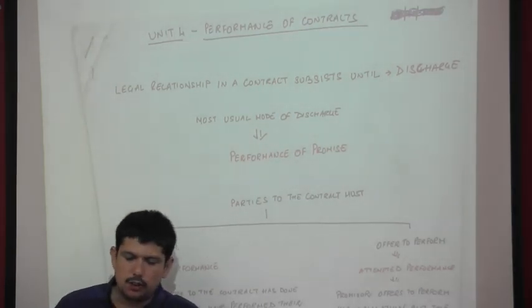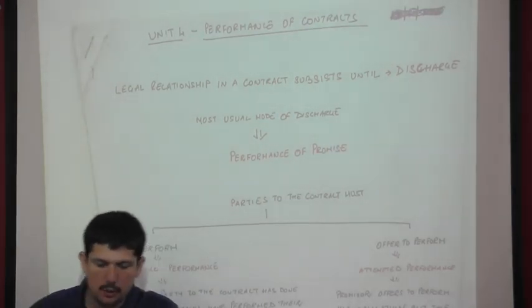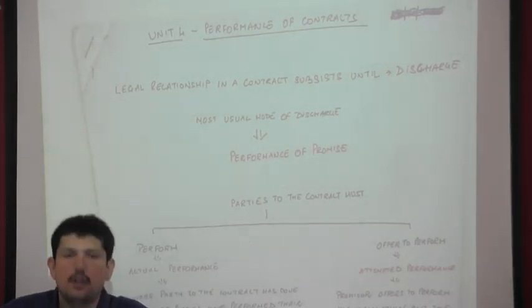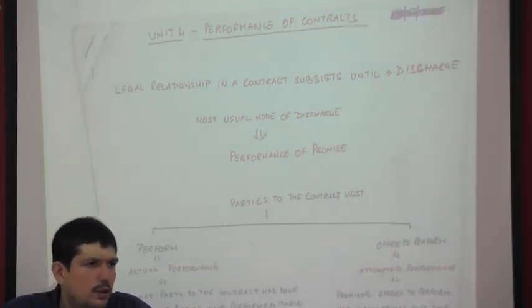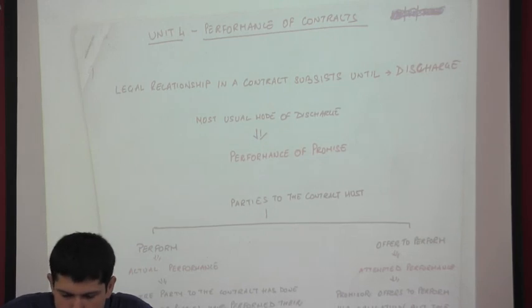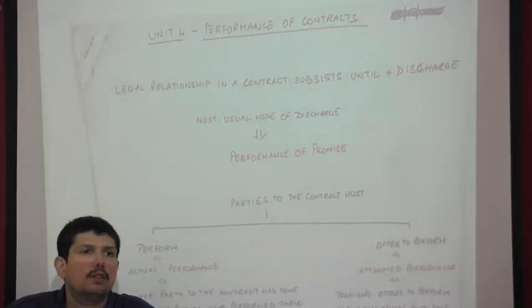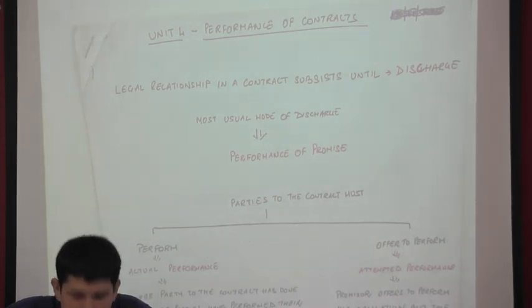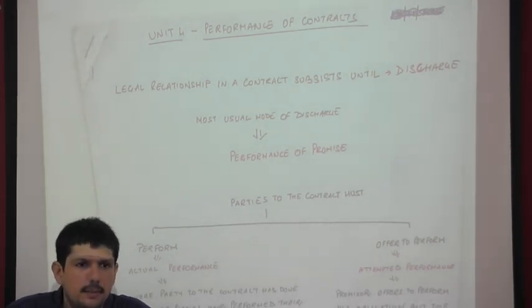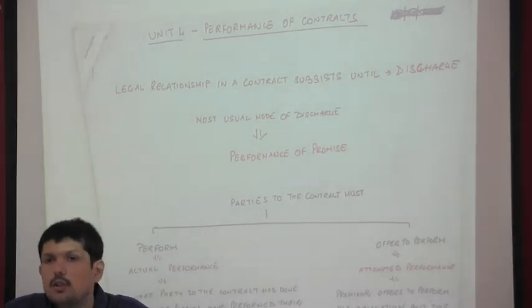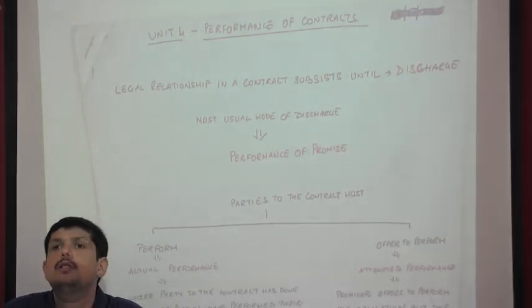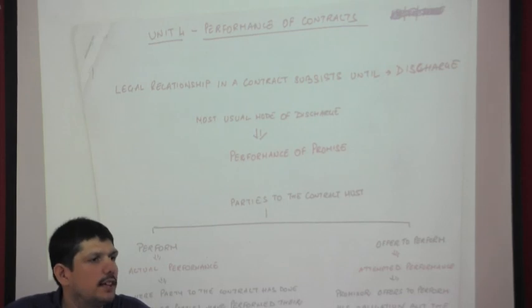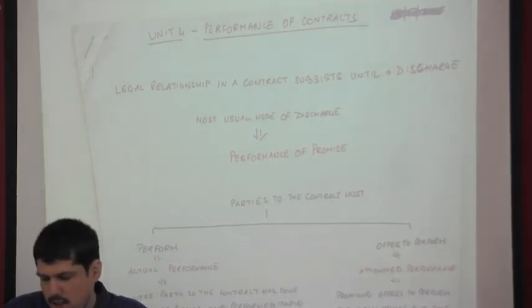We start with Unit 4 of the Indian Contract Act. This unit's name is Performance of a Contract. We have already covered Unit 1, Unit 2, and Unit 3 — what is a contract, consideration, and the essential elements of a valid contract.